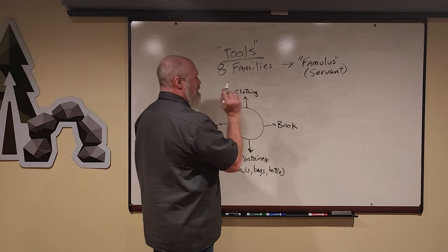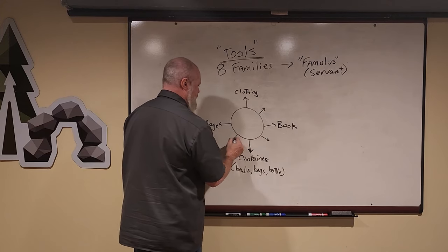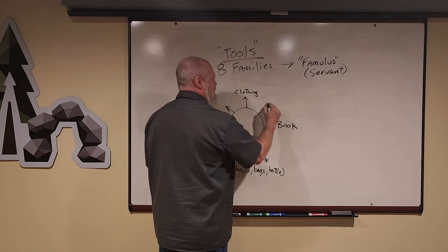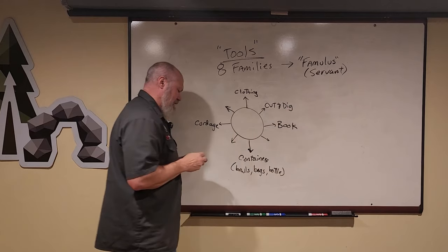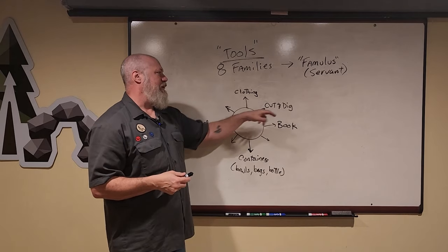So besides these four basic families, we have some larger families that come kind of in doubles: cut and dig. So the cut and dig family and the archetypes here are of course the knife and the shovel, the ax, the saw, things you use to cut and dig with.